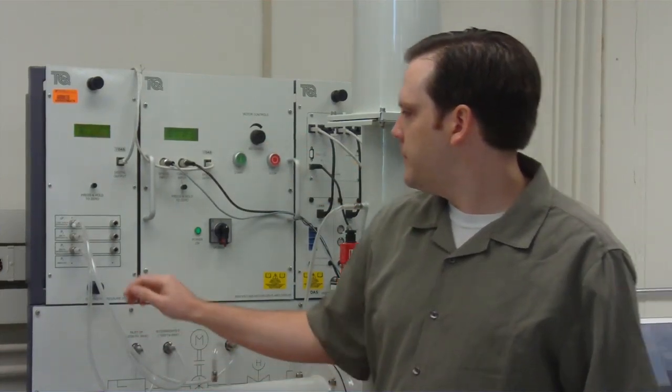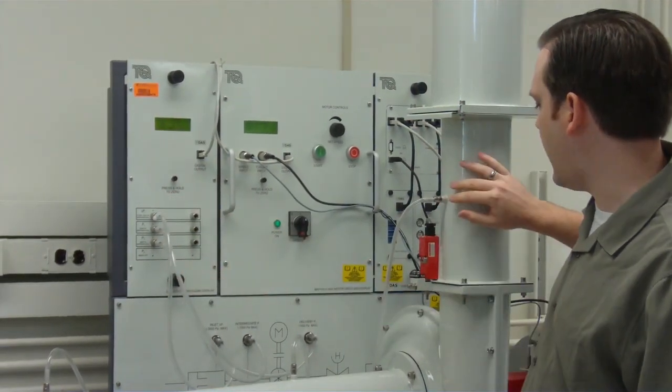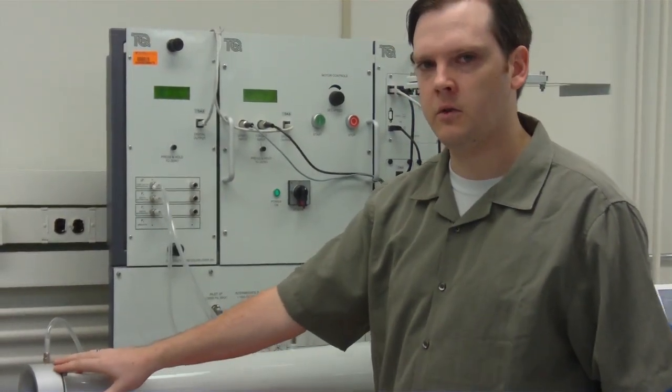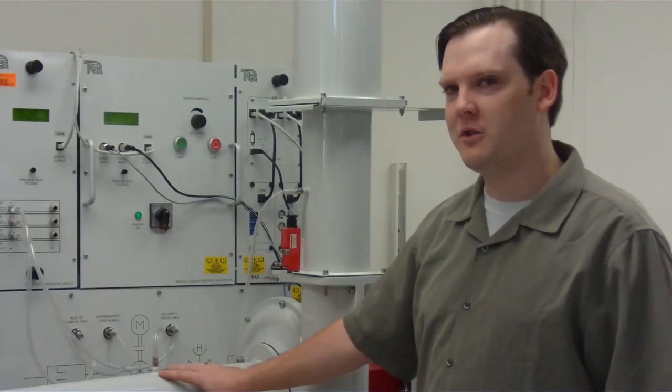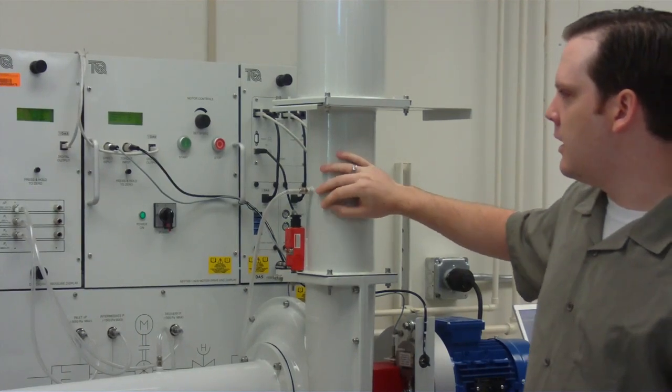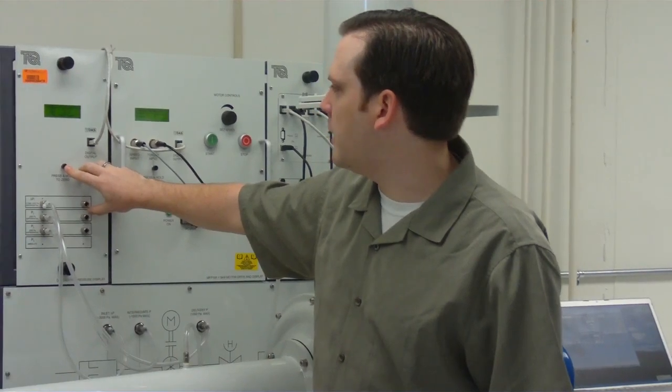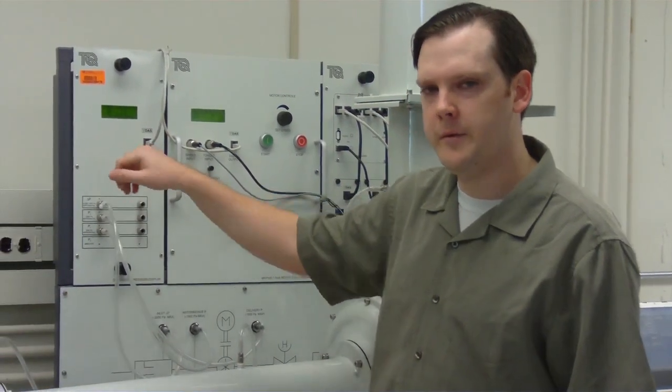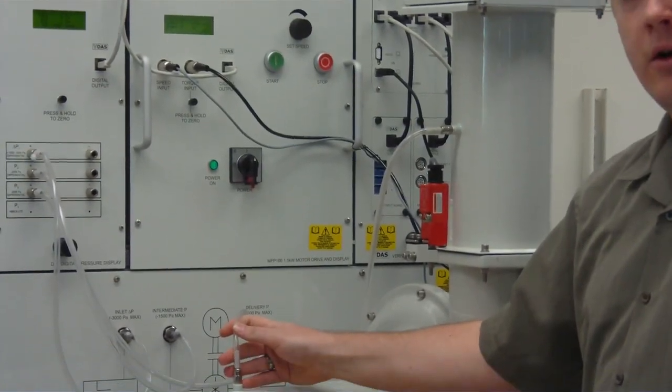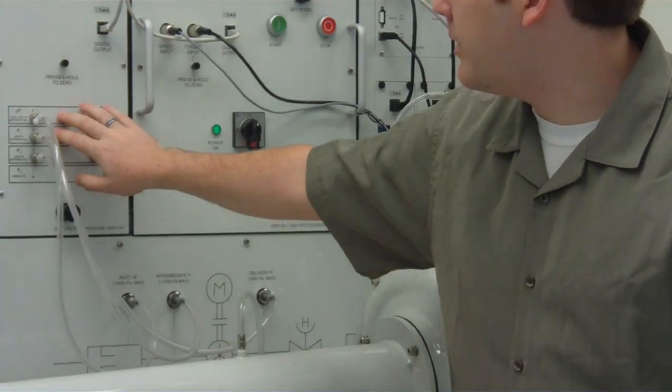The pressure gauges are on this panel here. Each of them connects to a pressure tap on the unit. P1 is here at the nozzle, P2 just before the impeller, and P3 just after the impeller. They all read out here, and you can zero those values by pressing and holding this button while the unit is turned off. Before you begin, check to make sure that all of these lines run to the correct pressure taps, and there are no kinks.